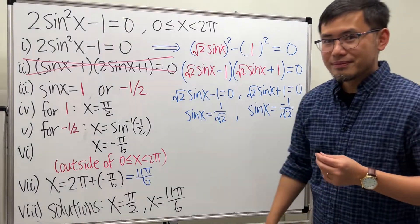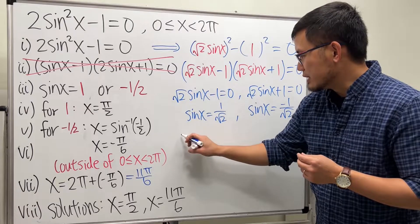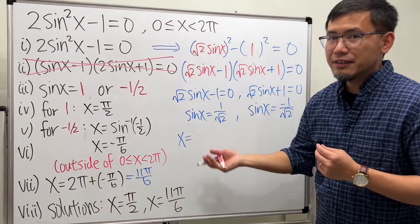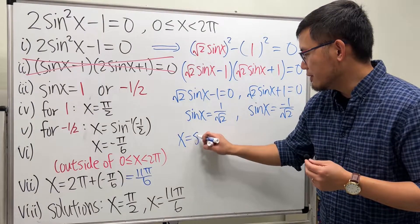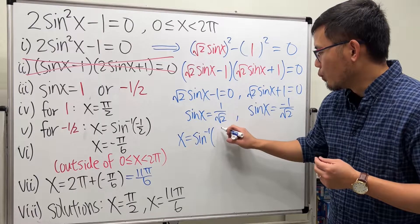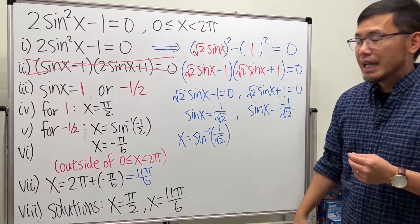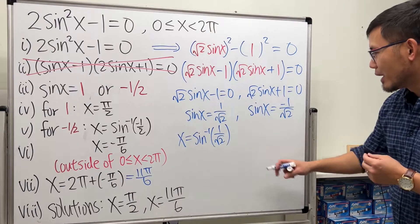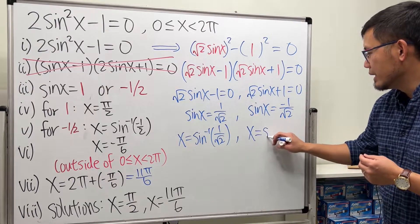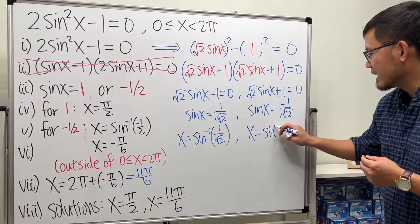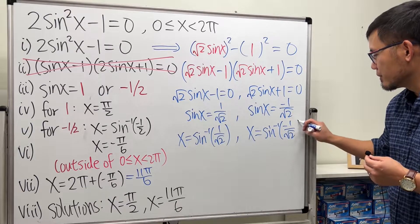So what do we do? For this one, we say x — you take the inverse sine on both sides. So you have the inverse sine of 1 over square root of 2. Similarly, right here, you do the same thing. You say x is equal to inverse sine of negative 1 over square root of 2.